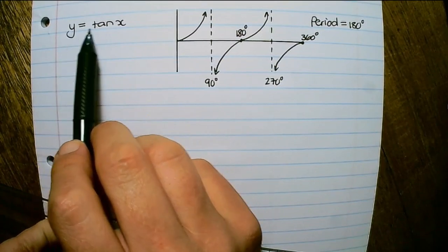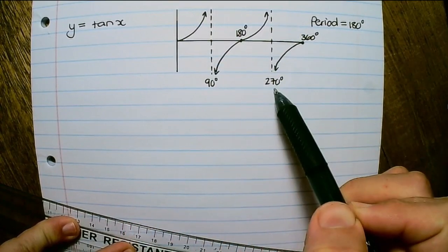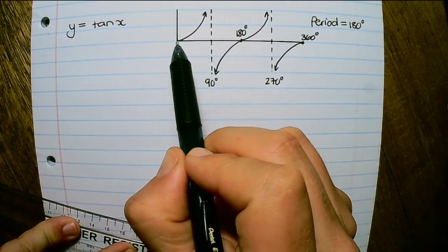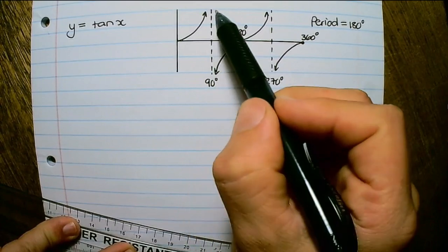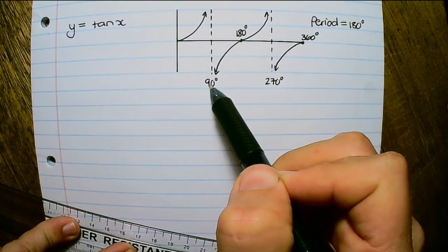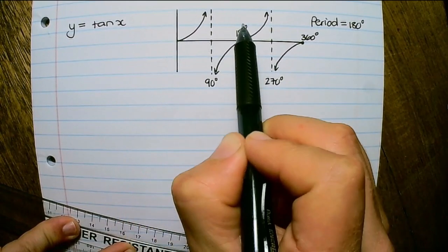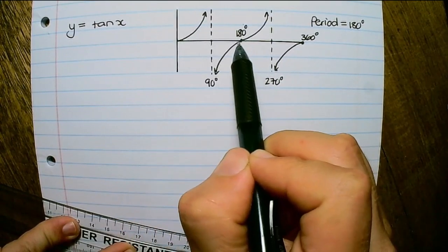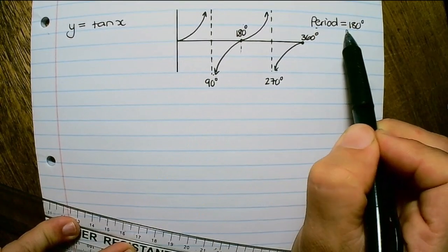Thirdly, we have y equals to tan x. The tan graph has asymptotes at 90 degrees and 270 degrees within a full cycle. That means the tan graph does not have a maximum or minimum value — they are infinite values. At the asymptote, the tan graph will never be able to meet or cross 90 degrees. But if you look carefully, after 180 degrees that same cycle repeats, so it takes only 180 degrees for tan to complete a full cycle. Therefore, its period is 180 degrees.